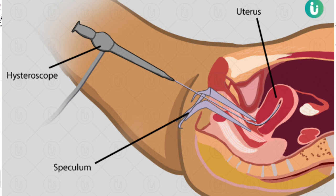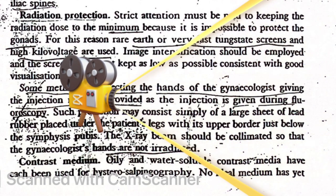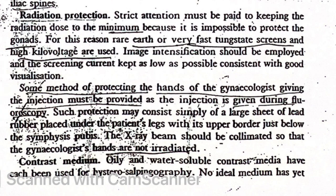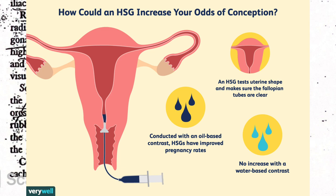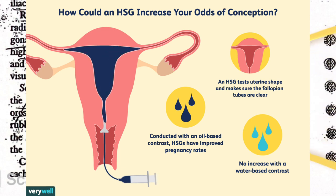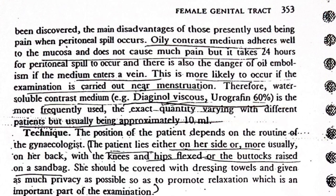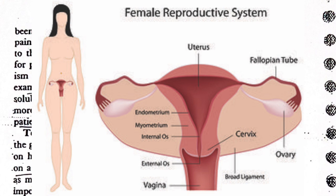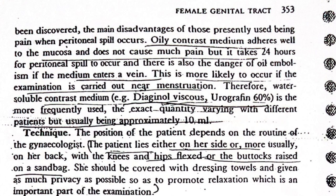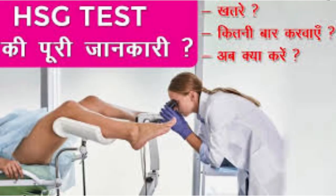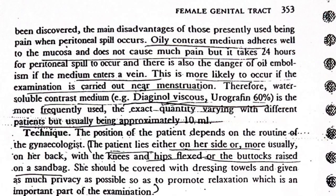Contrast medium: only oily and water-soluble contrast media have been used for HSG. No ideal medium has yet been discovered. The main disadvantage of those presently used is pain when peritoneal spill occurs. Oily contrast medium adheres well to the mucosa and does not cause much pain, but it takes 24 hours for peritoneal spill to occur, and there is the danger of oil embolism if the medium enters a vein. This is more likely to occur if the examination is carried out near menstruation.